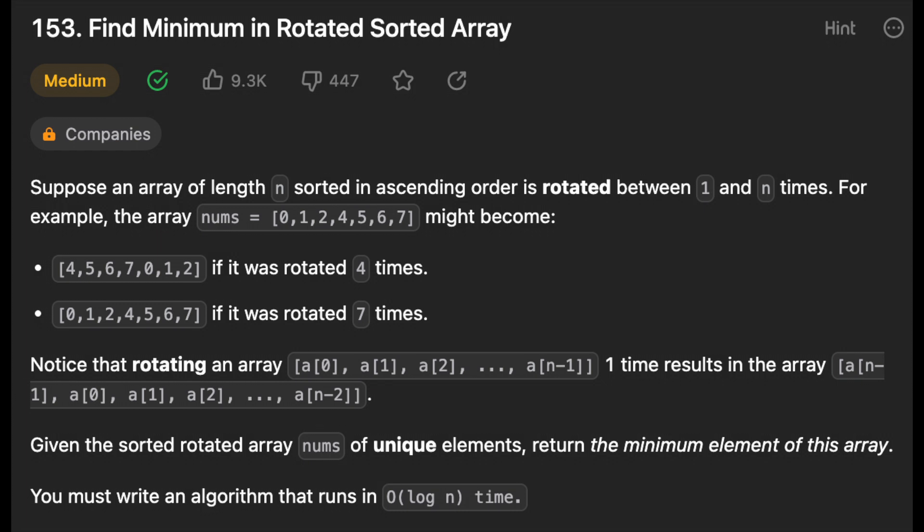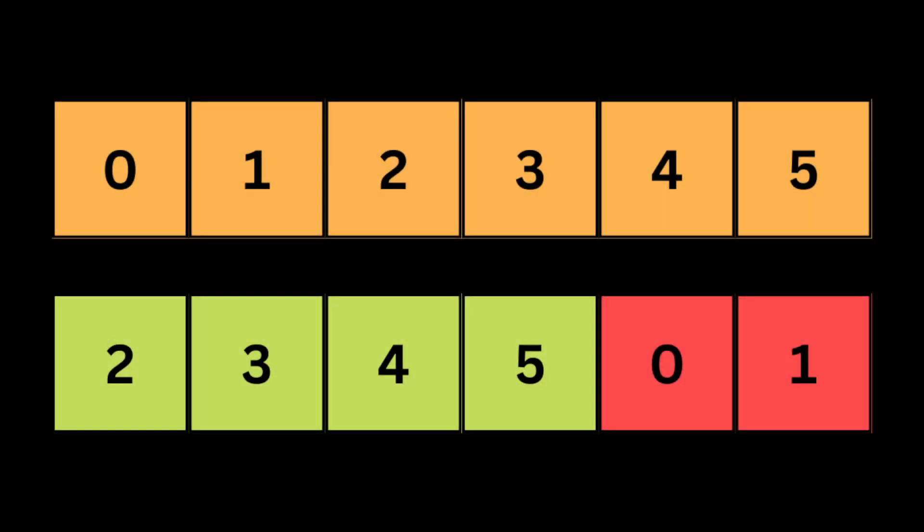First, what do we mean by a rotated sorted array? A rotated sorted array is when you take a sorted array and rotate it at some pivot unknown to you beforehand. For example, here we shift zero to be at index 4, but if we go from zero to the right we still have sorted numbers. We need to wrap around, and the question is: find the minimum in this rotated sorted array.